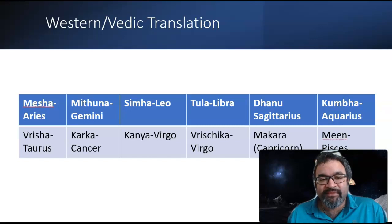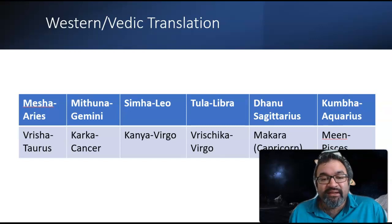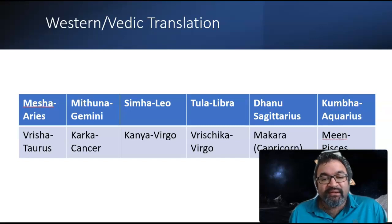The first sign is the fiery sign Aries, represented by a ram, and that's why it's called Mesha in Sanskrit. The second one is Taurus, represented by a bull, and the bull is known as Rishab.